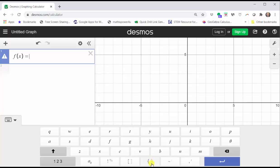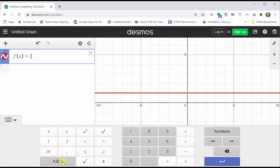The curly brackets are at the bottom toward the middle here. Next, we enter the first interval, which is x less than three. Using the desmos keypad, click 1 2 3, x less than three.